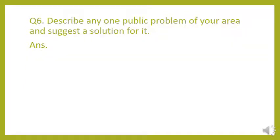This last question is to be done by yourself: describe any one public problem of your area and suggest a solution for it. For example, a pothole causing accidents, water shortage, electricity issues — any problem that not just you but all people in your area are facing. Suggest a solution as well. There is no need to write a detailed answer — just two to four lines, maximum five, to keep it easy to learn for tests.